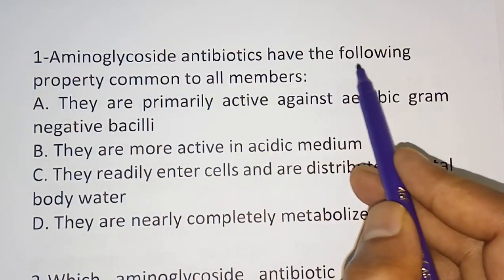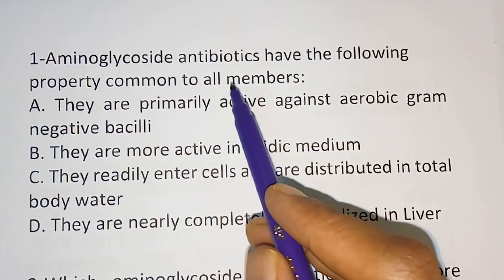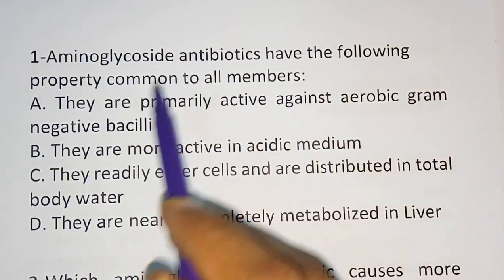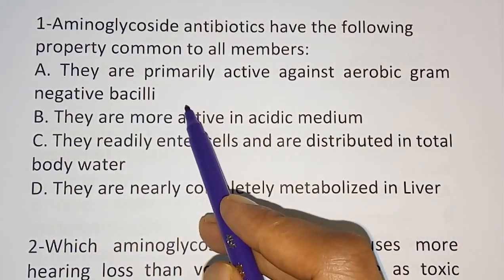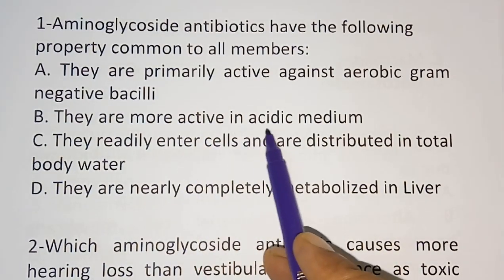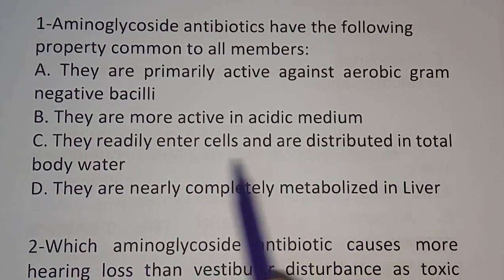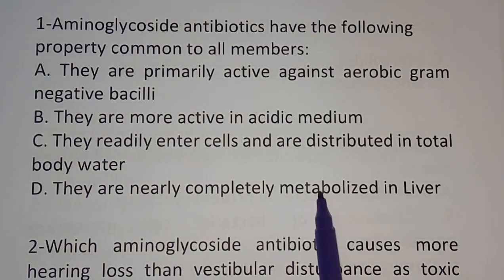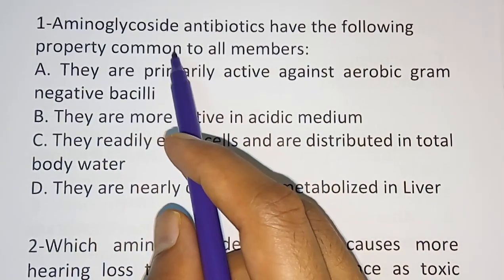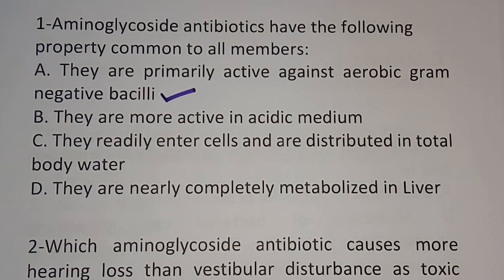Question 1: Aminoglycoside Antibiotics have the following property common to all members. Option A: they are primarily active against aerobic gram-negative bacillus. Option B: they are more active in acidic medium. Option C: they are readily absorbed and distributed in total body water. Option D: they are nearly completely metabolized in the liver. The correct answer is Option A — they are primarily active against aerobic gram-negative bacillus.